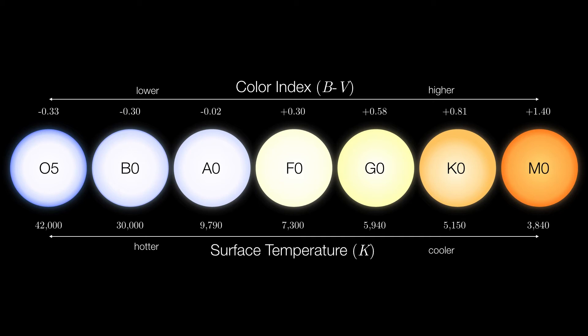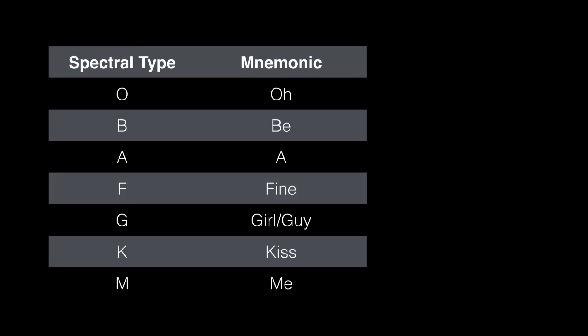So where does our sun fit into all this? It turns out that it's a G2 spectral type star. It has a color index of 0.67 and a surface temperature of about 5,800 Kelvin — a little bit cooler than a G star, but certainly not nearly so cool as a K star. If you're having difficulty remembering the order of the spectral types according to their temperatures, just remember this mnemonic: 'Oh, be a fine girl or guy, kiss me.'